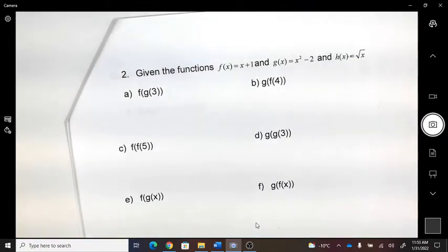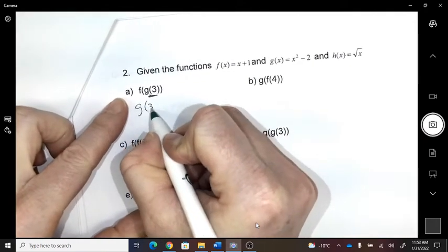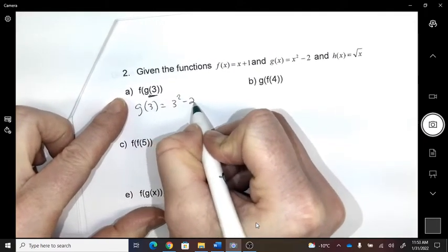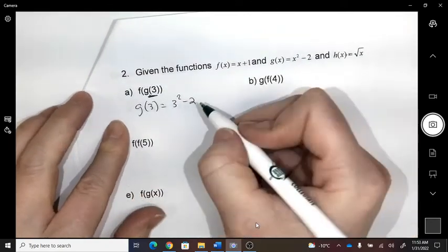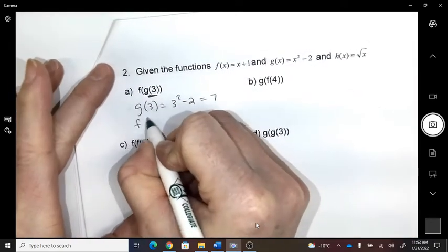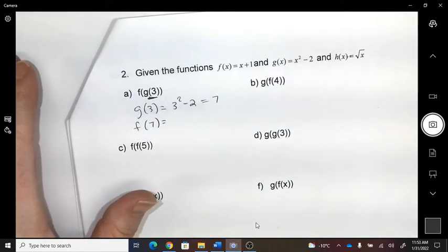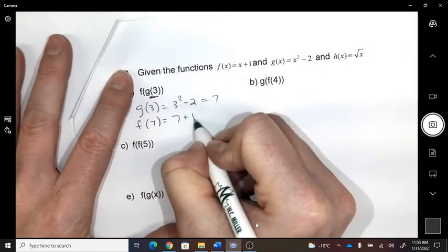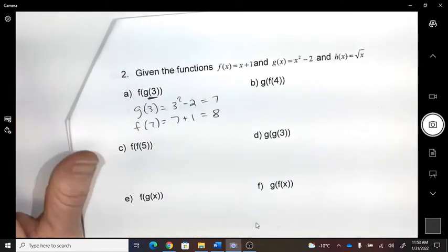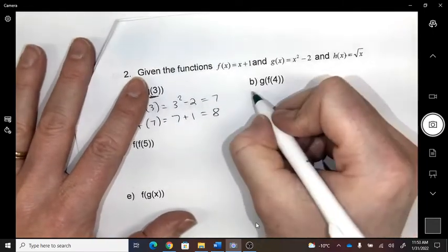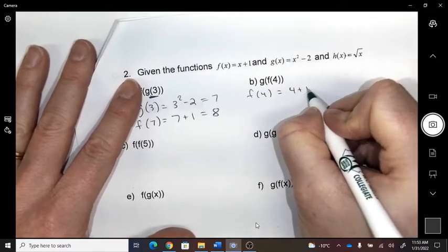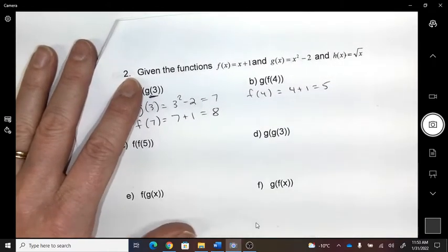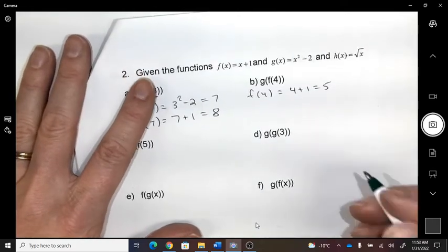Okay, now g of three. So I'm plugging three into that function, which is seven. So now I'm plugging seven into the f function. So plug four into the f function. Five, and then plug five into the g.